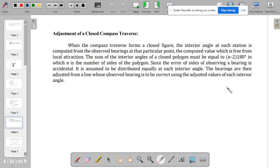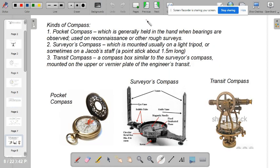If it happens that the computed interior angles are not equal to the closed polygon results in the formula, that difference will need to be distributed throughout the interior angles of that polygon. So kung halimbawa mayroon kayong limang interior angles sa polygon, you have to divide that difference into equal, into five equal values. The bearings are then adjusted from a line, whose observed bearing is to be correct using the adjusted values of each interior angle.